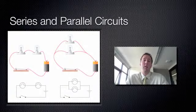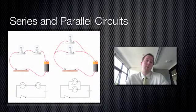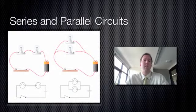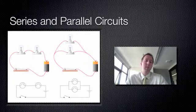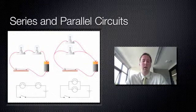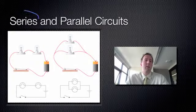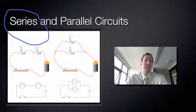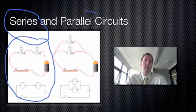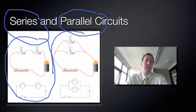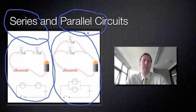Something which comes up when we're discussing circuits is different types of circuits. There are two main types of electrical circuits: they are series and parallel circuits. I've got a picture of a series circuit and a parallel circuit here. This here is a series circuit, and this is a parallel circuit.